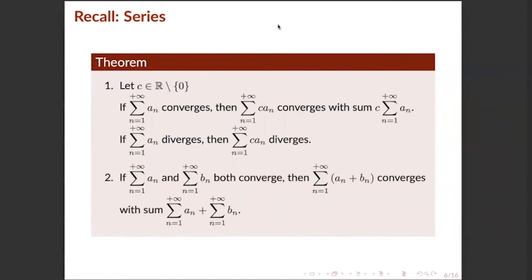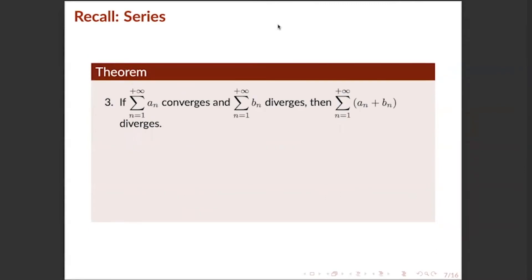Number two: if a_n and b_n are both convergent series, then the series of their sum is also convergent, with sum equal to the sum of the two individual series. Number three: if a_n is convergent and b_n is divergent, then the series of their sum is divergent.